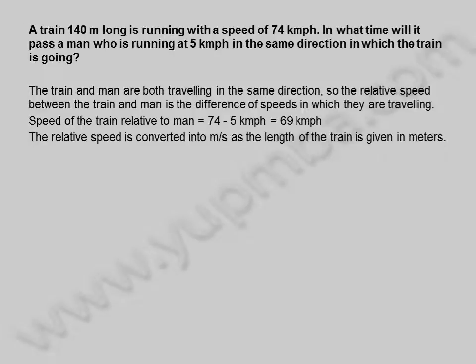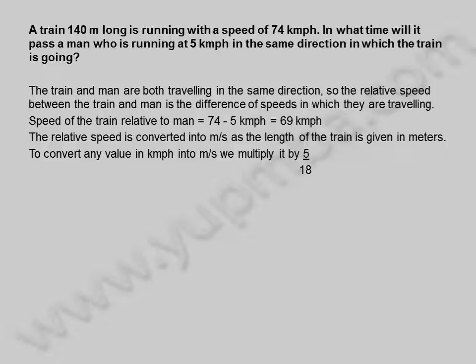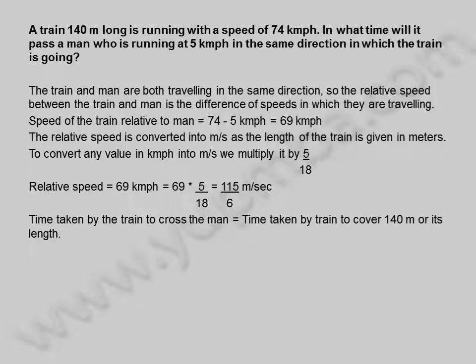The relative speed is converted into meters per second as the length of the train is given in meters. To convert any value in kilometers per hour into meters per second, we multiply it by 5 divided by 18. Relative speed is equal to 69 kilometers per hour, which is equal to 69 into 5 divided by 18, which equals 115 divided by 6 meters per second.